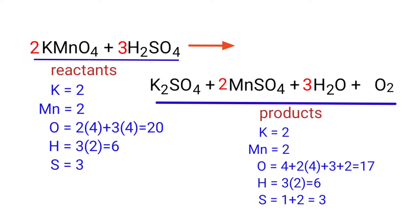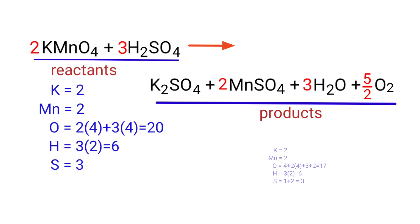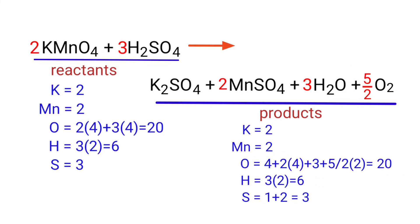The Hydrogen atoms are balanced. Now we need to balance the Oxygen atoms — to do this we need to put a coefficient of 5/2 in front of O2. In this equation 5/2 is a rational number. We don't use rational numbers for a chemical equation, so to get whole numbers we need to multiply this entire equation by a coefficient of 2.